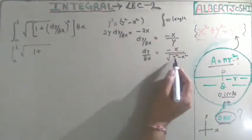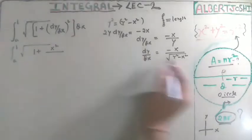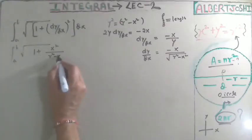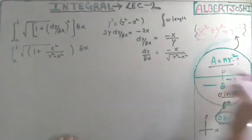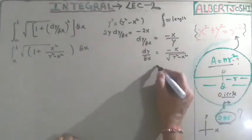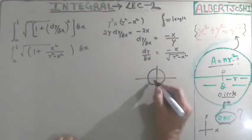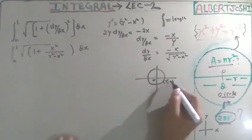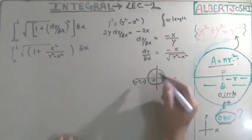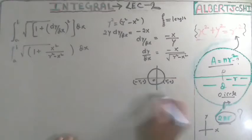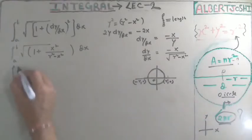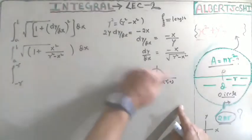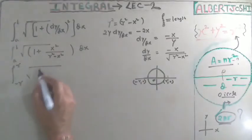Substituting dy/dx into the formula, we get the integral of √(1 + x²/(r²−x²)) dx. The terms simplify because r²−x² cancels appropriately. For the limits: the upper semicircle runs along the x-axis from −r to r, so a = −r and b = r, covering only the upper portion from 0 to π.